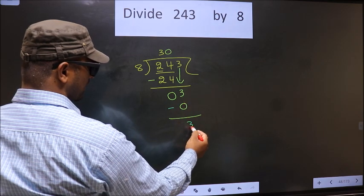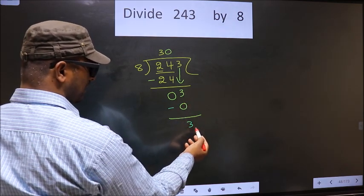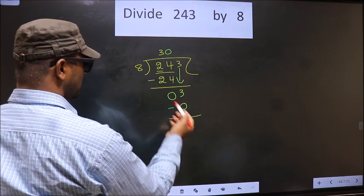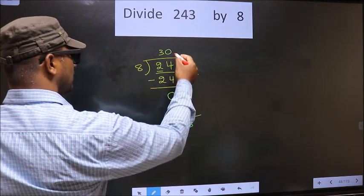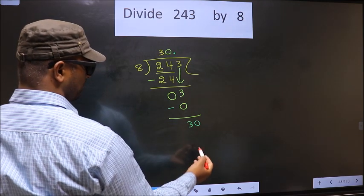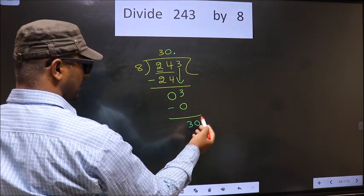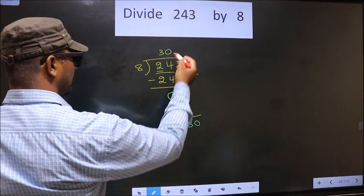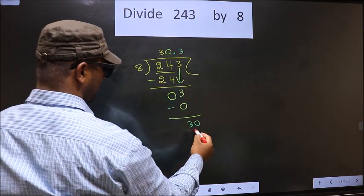Over here, we did not bring any number down, and 3 is smaller than 8. So now you can put a dot and take 0 here. Now here 30, a number close to 30 in the 8 table is 8×3=24.